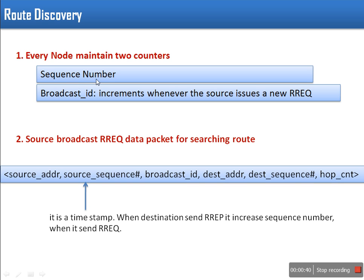Every node maintains two counters: one for sequence number, which works as a timestamp, and the second one is the broadcast ID — this is the route request packet ID.